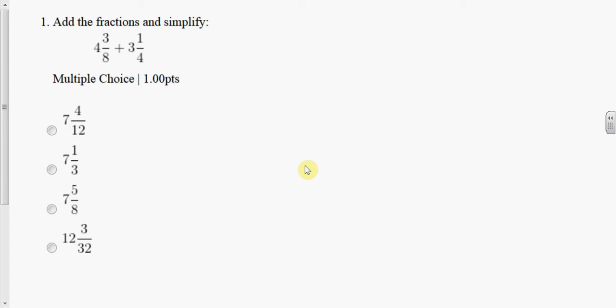Add the fractions and simplify. So we're going to add 4 and 3 eighths plus 3 and 1 fourth. We need to be able to find the least common denominator.